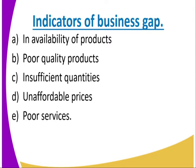Number four: unaffordable prices. The goods are there, but they are sold at a high price. So you can offer them at fair prices. Number five: poor services. These are also indicators that a business gap exists and present an opportunity for an entrepreneur to step in.